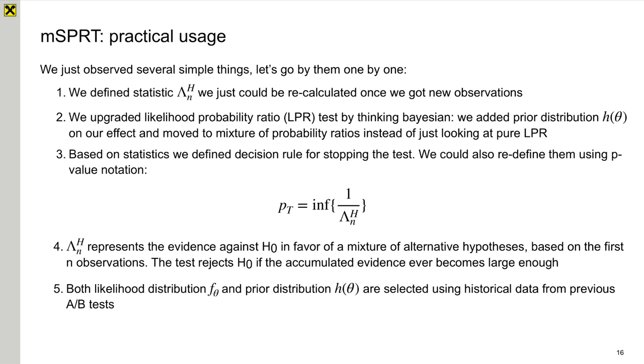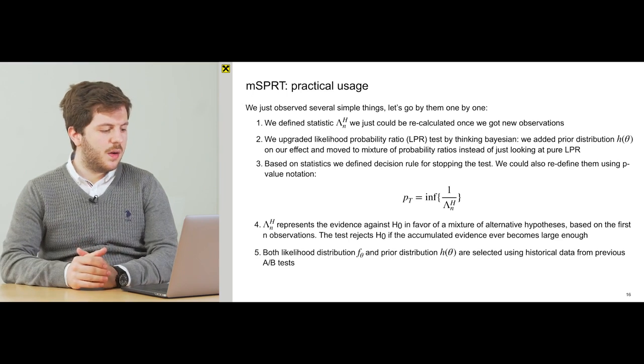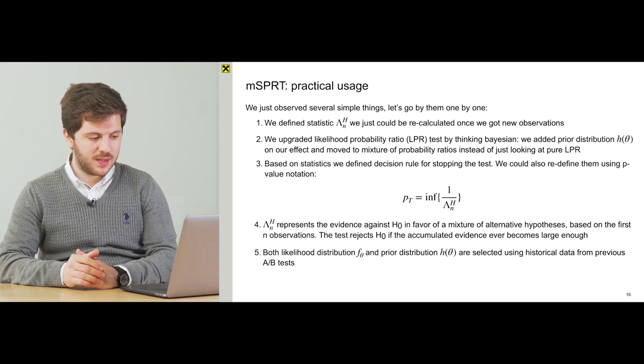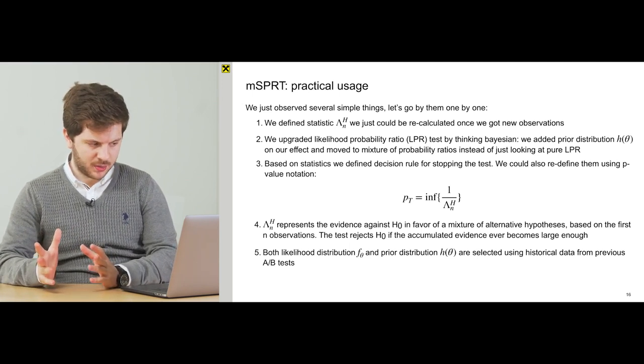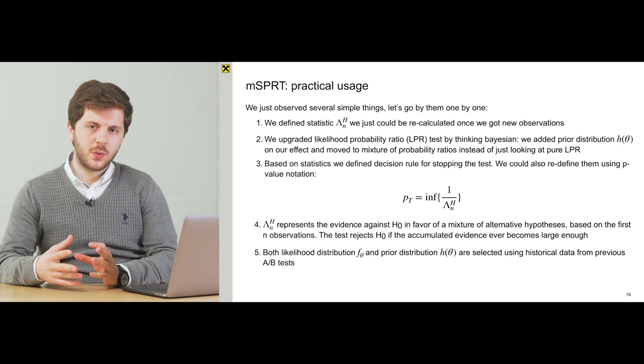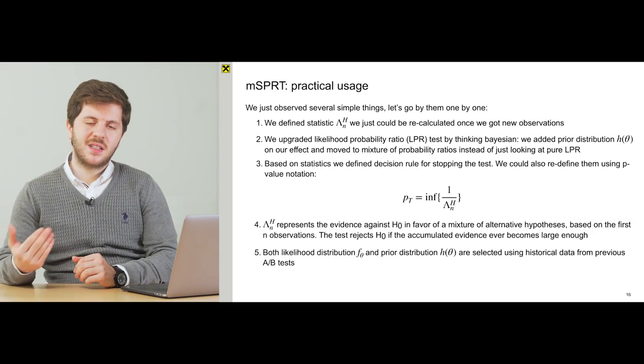The third thing that we did is we defined a decision rule for stopping the test. We also could define how to calculate p-value for valid p-value process and it simply is 1 divided by statistics lambda. And actually our statistics lambda, if we are talking about some intuition there, represents the evidence against null hypothesis in favor of mixture of alternative hypotheses. And if we accumulated enough evidence, I think it means that we could reject null hypothesis and say that the effect exists.